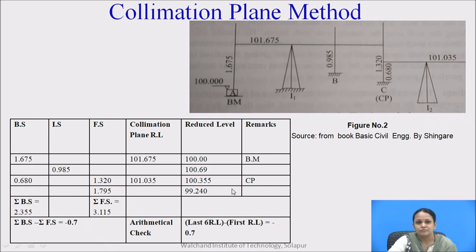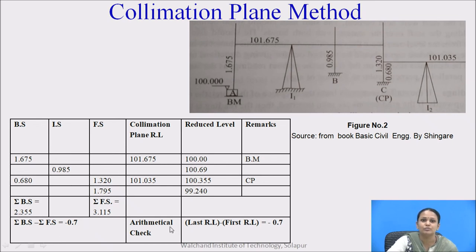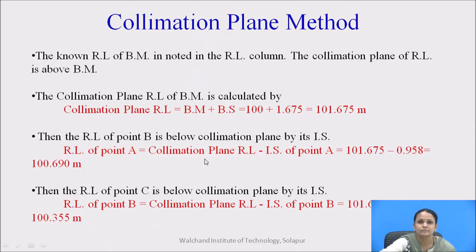Now, we need to check whether the reduced levels we have calculated are correct using an arithmetical check. This check is carried out by taking the difference of the sum of all backsight readings and the sum of all foresight readings, which should be equal to the difference of the last reduced level and the first reduced level. When this difference is the same, the calculated reduced levels are confirmed as correct.